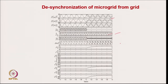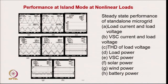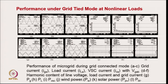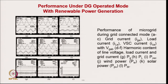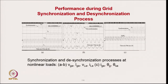In islanding mode, the voltage THD is 2.7 percent even under highly nonlinear load. In grid-connected mode, the grid current THD is quite low. In DG set operating mode, the DG set current, load current, and compensating current provide active filtering, improving power quality on the DG set side. When the grid disappears, load voltage and load current are not affected. When the grid reappears, after a few cycles of synchronization, the grid current starts appearing when the switch is closed. Desynchronization shows that the angle synchronization process is well-managed along with current and voltage dynamics.